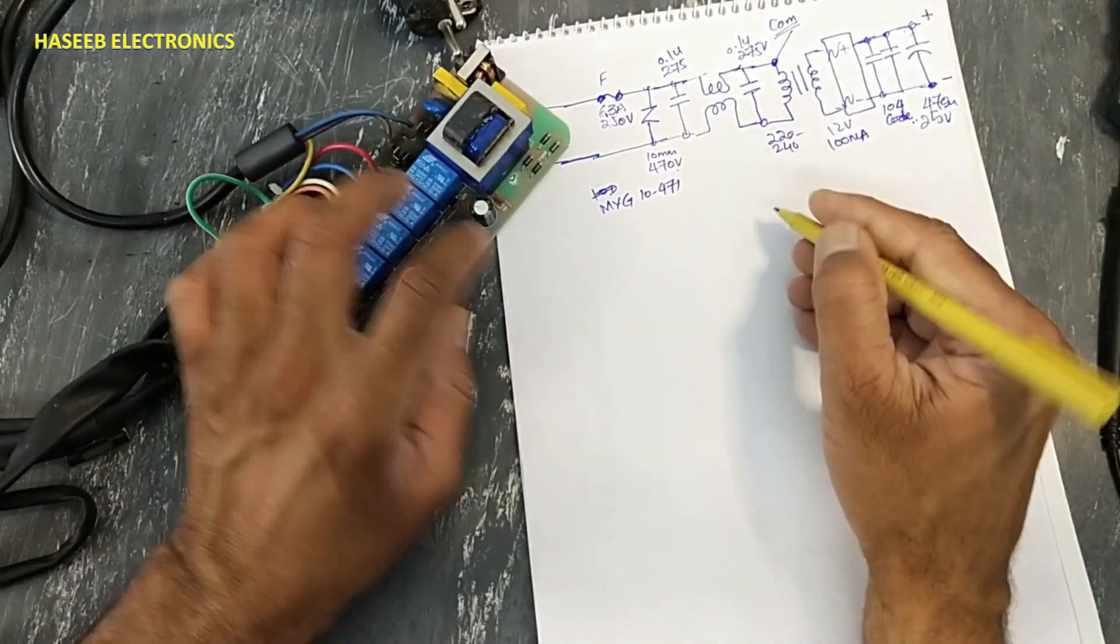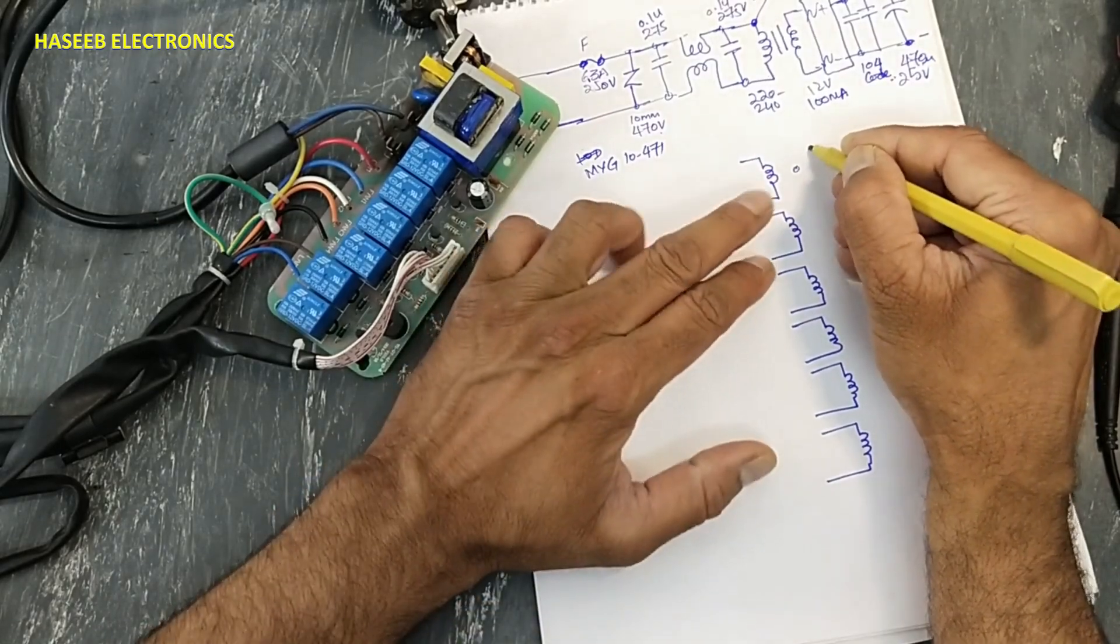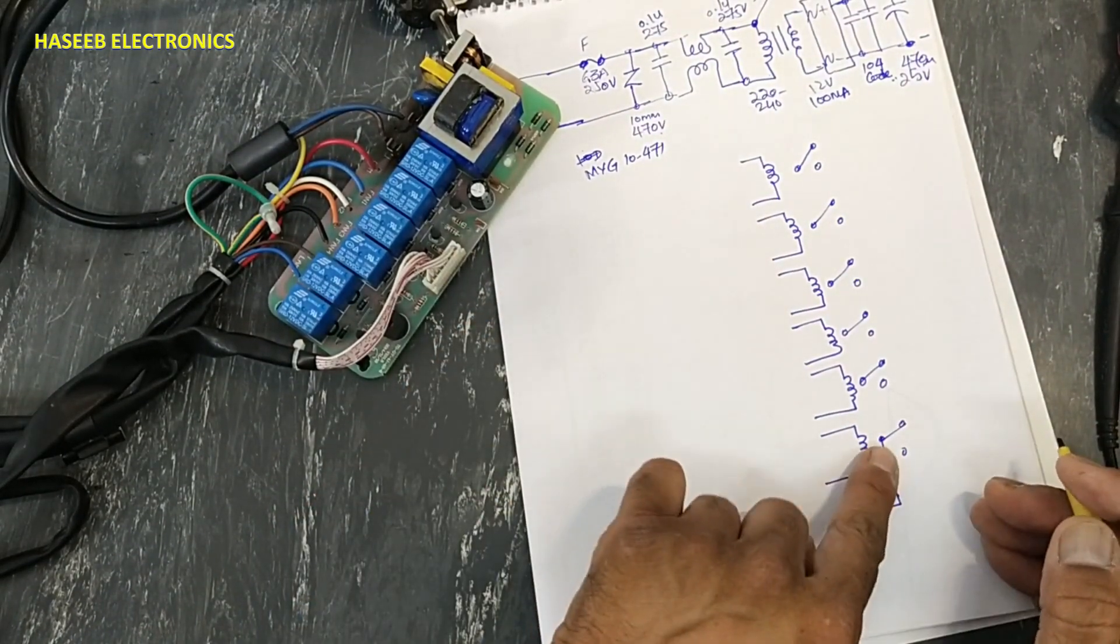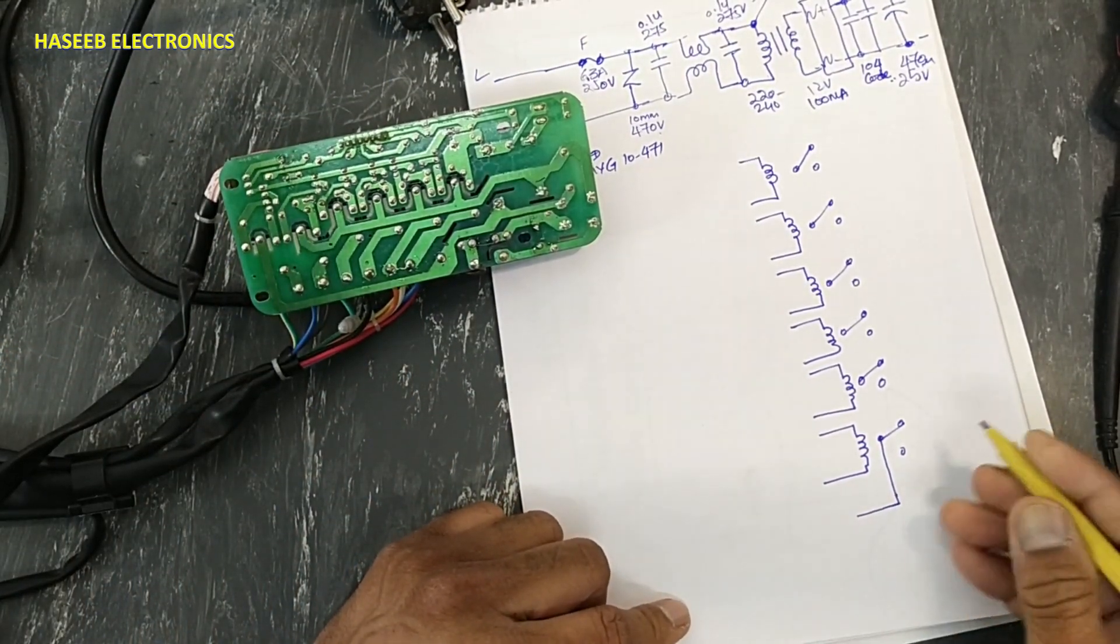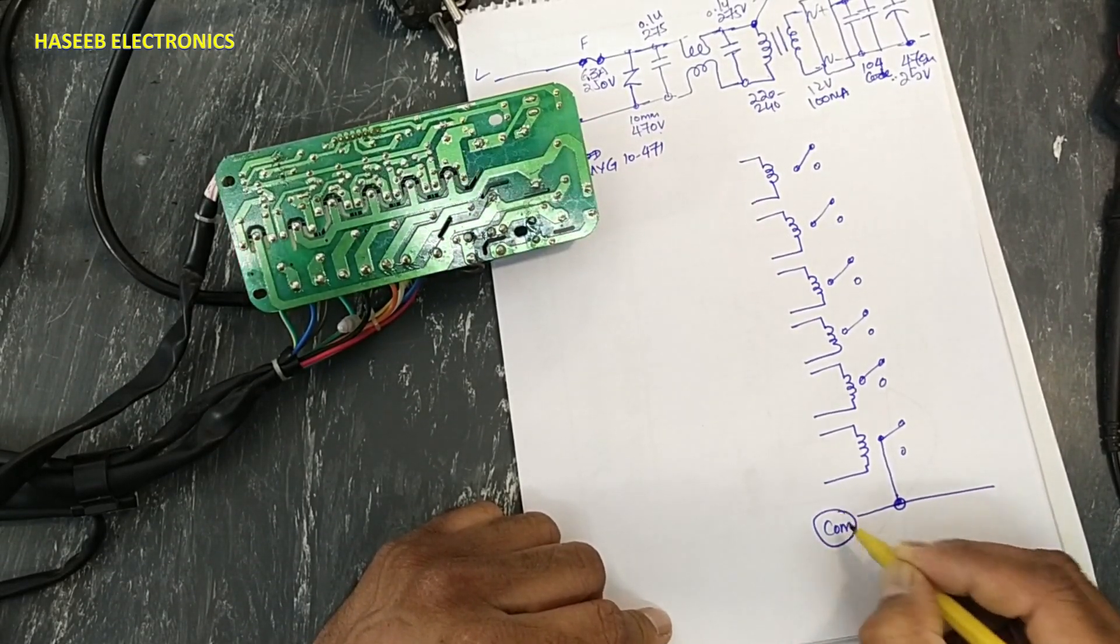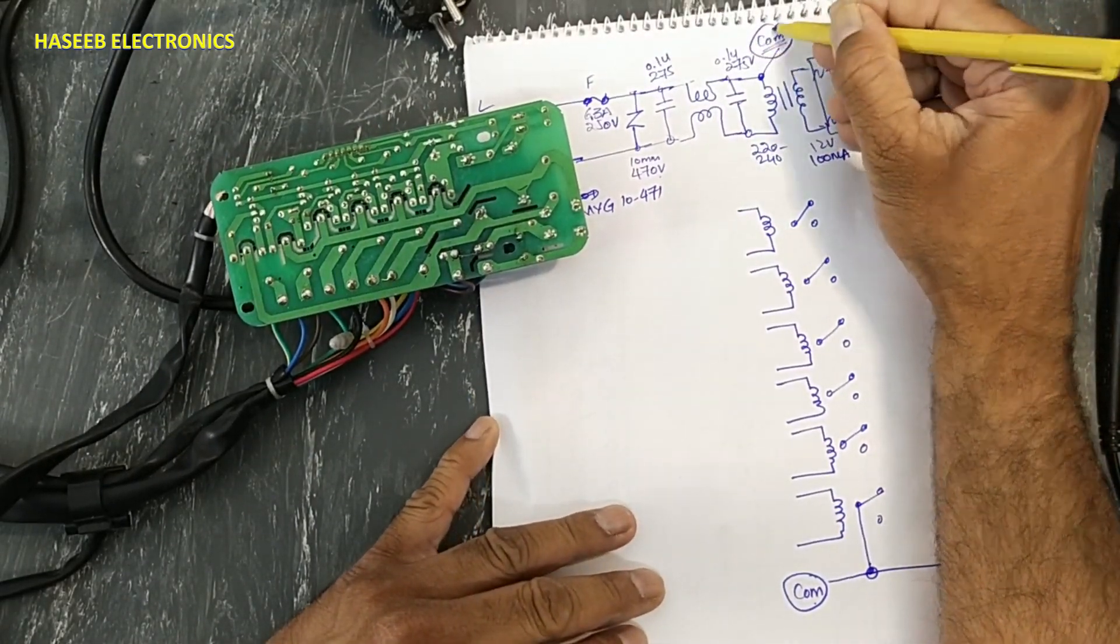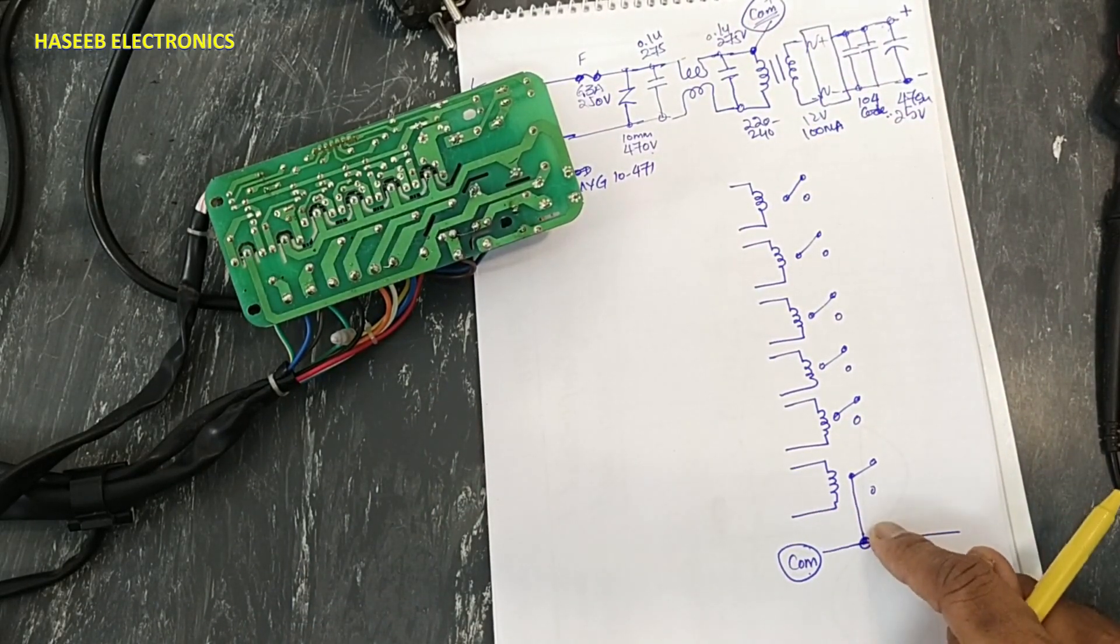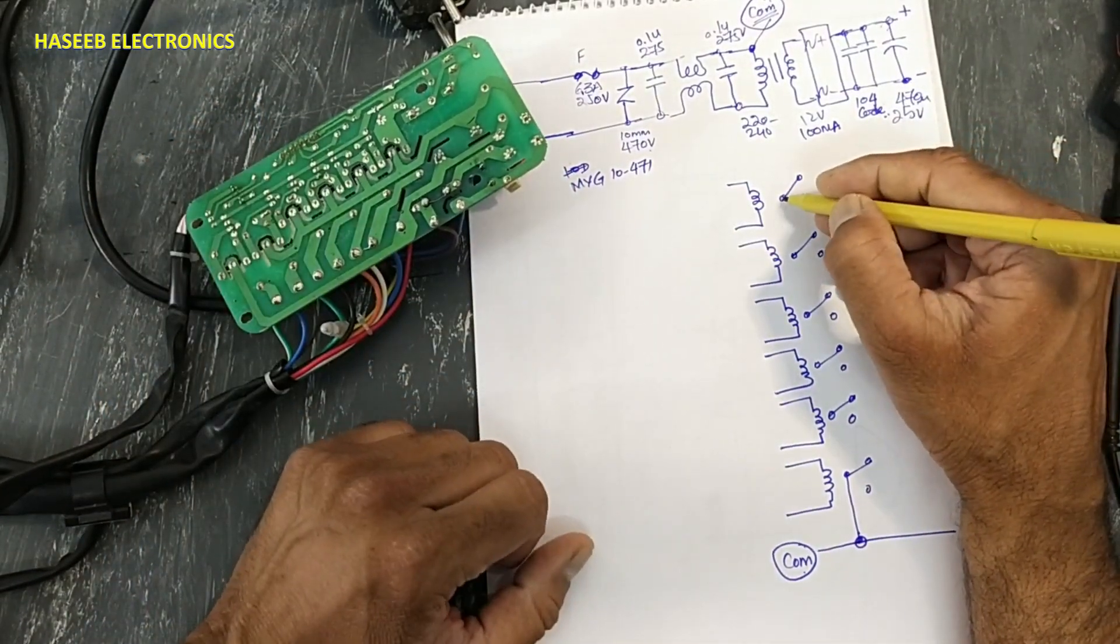Now I will draw one, two, three, four, five, six. Six relays. Each relay has three points. The last relay, this one, is connected to the common point. This point is coming from here, so this point is connected here. This will switch common voltage, but these relays all common points are connected together.